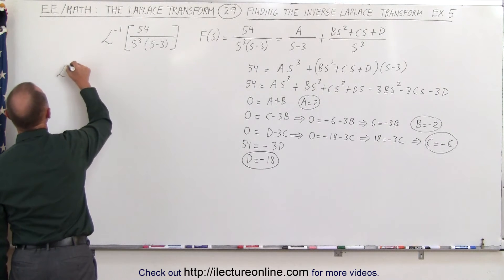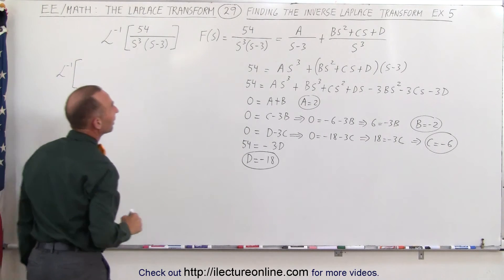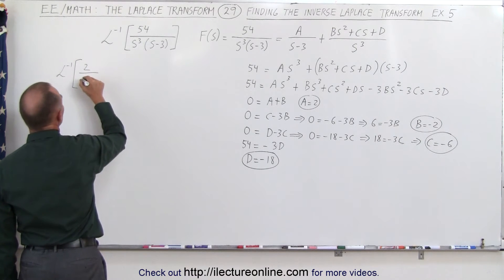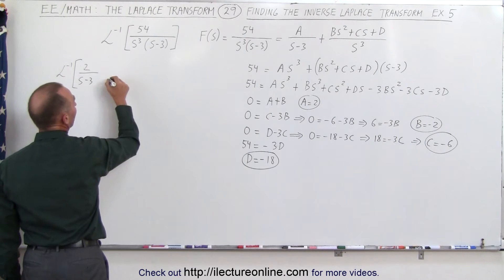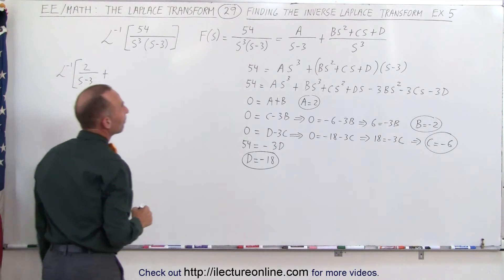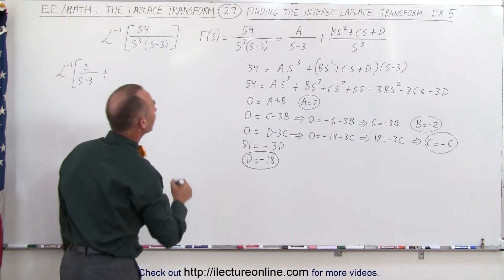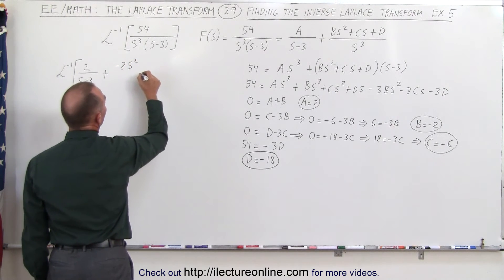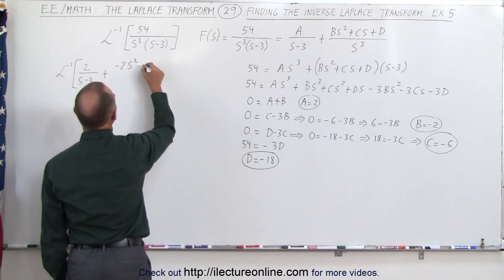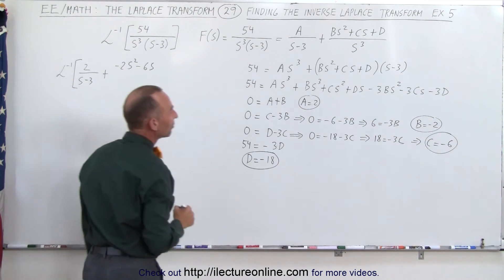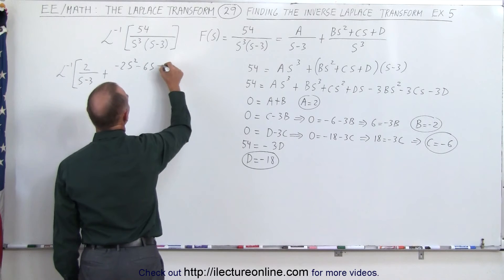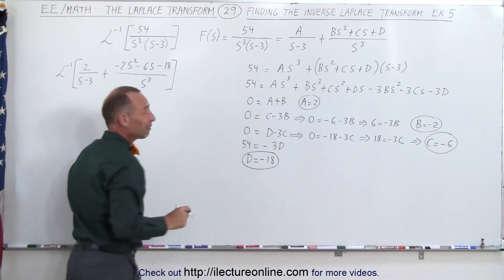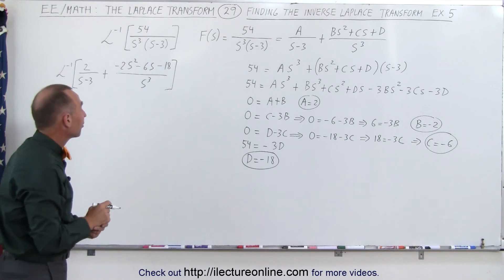We can now find the inverse Laplace transform. With a equal to 2 that gives us 2 divided by s minus 3. b is minus 2, so that's minus 2 s squared. c is minus 6, so that's minus 6 s. And d is minus 18 — all divided by s cubed.